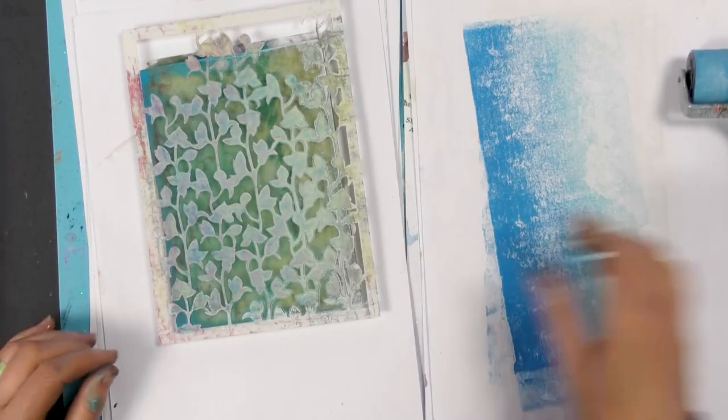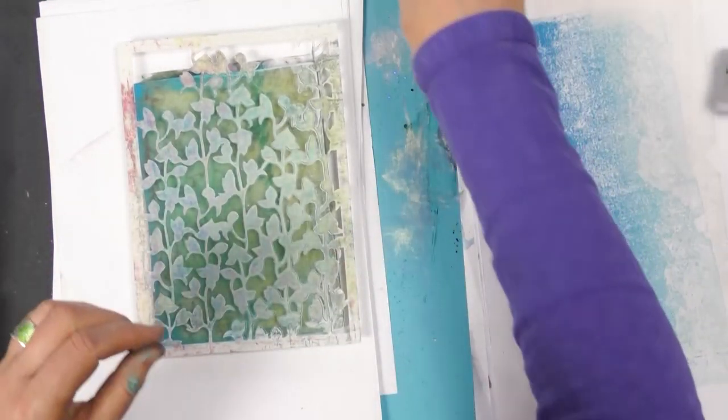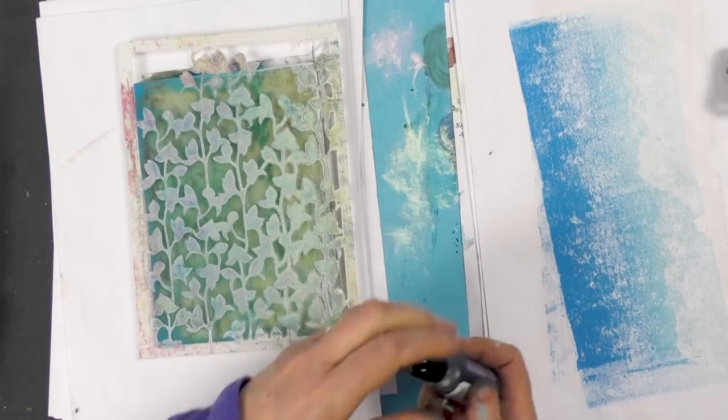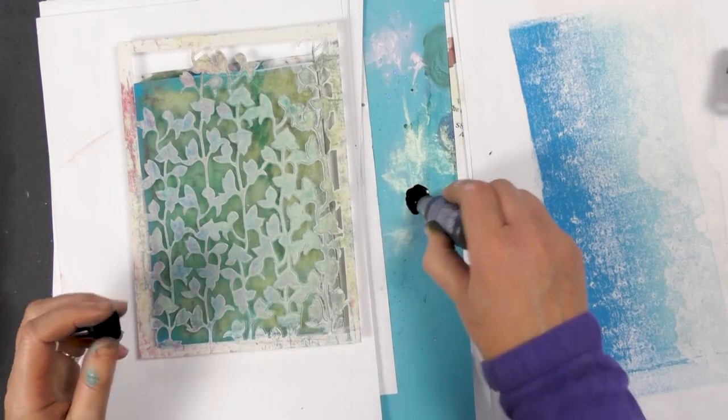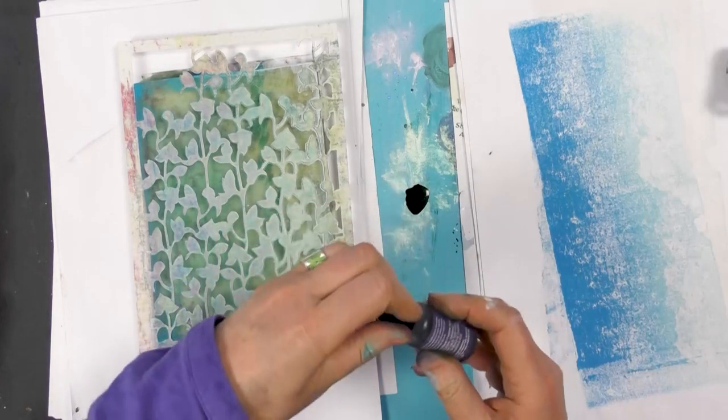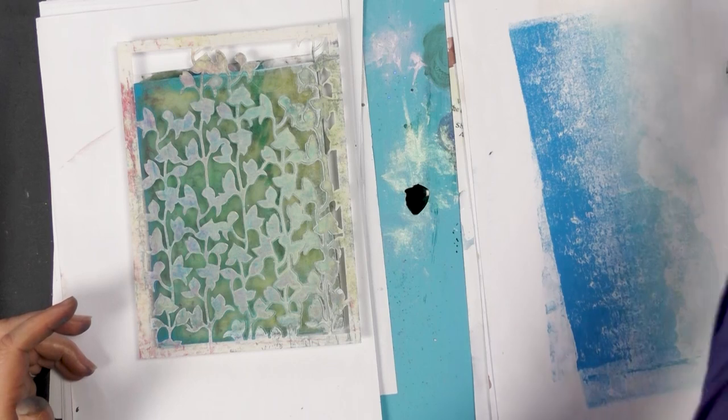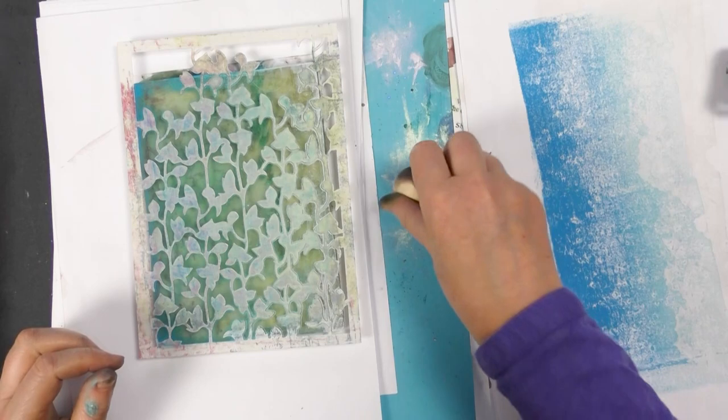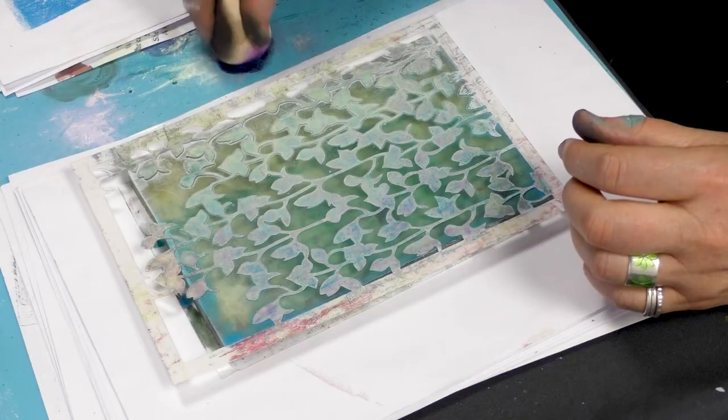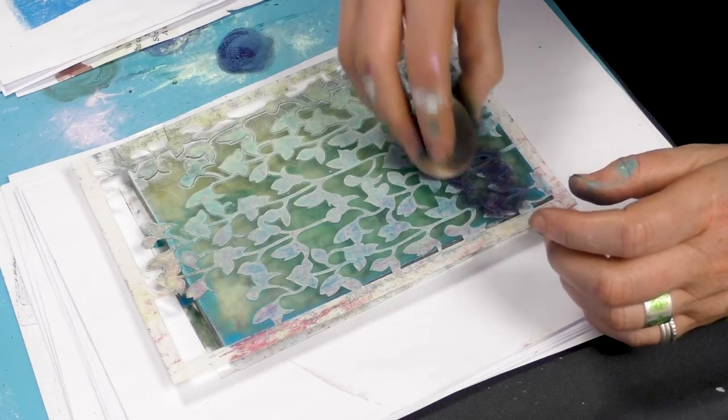So now I'm going to pop down on our mat a little bit of eggplant in the alcohol ink and then taking our smoothie. And then I'm going to just dab that over the top.